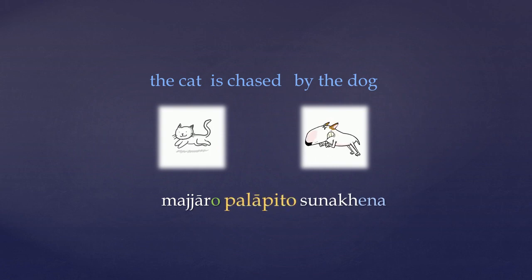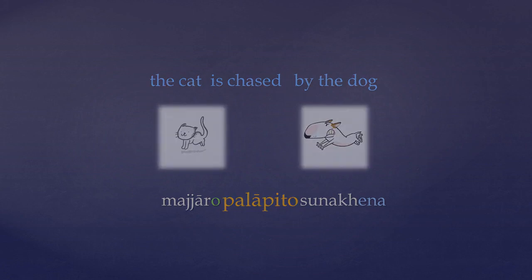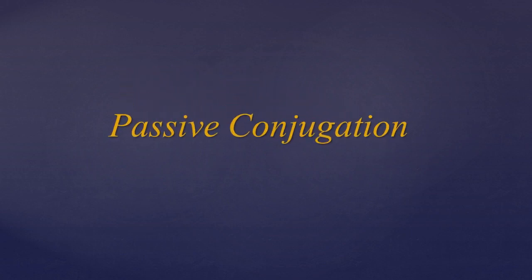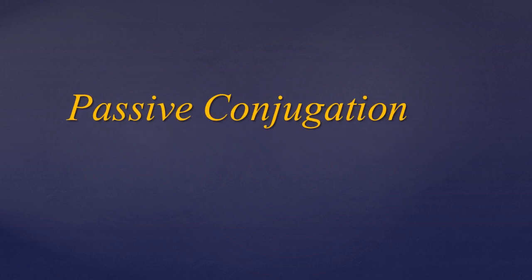Now the past participle in Pali is by far the most frequent form of passive construction. But Pali has a second, less common way to indicate the passive voice, and this is with a specific passive verb derivation, which Warder here calls the passive conjugation. So let's look at how it's formed and how it's used.